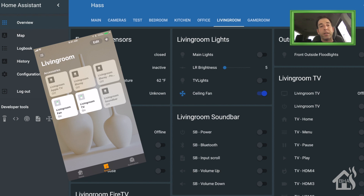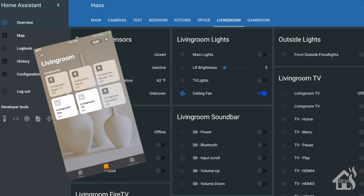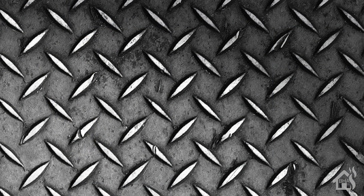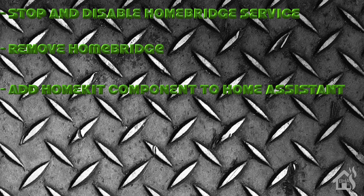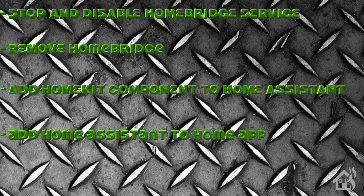Alright guys that's the end of this video. HomeKit is not fully functional in Home Assistant but hopefully will be very soon. To do a quick run through of everything we covered: we started by stopping and disabling our current Homebridge service. Once we did that we were able to remove all of Homebridge from our existing configuration. Once Homebridge was gone we were able to add the new Apple HomeKit component into Home Assistant. After restarting Home Assistant I then added Home Assistant into the Apple Home app on my phone, and lastly I showed you what that looked like in action.